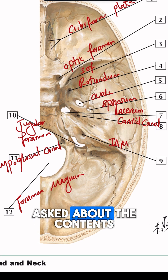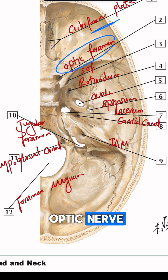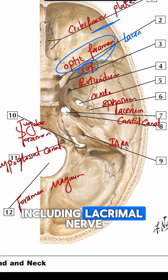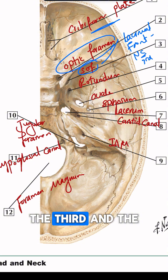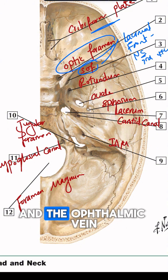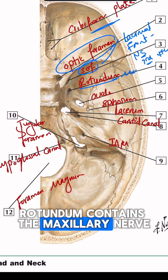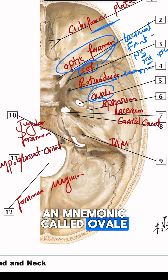You could also be asked about the contents of all of them. The cribriform plate contains the olfactory nerve. The optic foramen is for the optic nerve. The superior orbital fissure contains multiple structures including the lacrimal nerve, frontal nerve, nasociliary nerve, the third and the fourth cranial nerve, and the ophthalmic vein as well. Foramen rotundum contains the maxillary nerve. Foramen ovale contains the mandibular nerve.